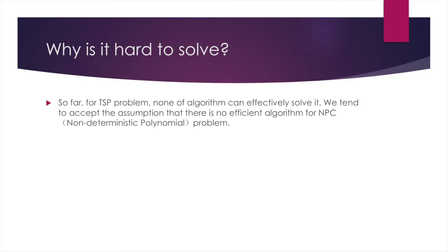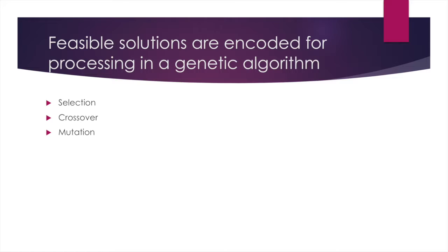Feasible solutions are encoded for processing GA, which is selection, crossover, and mutation. My teammate Jordan will expand more on these parts: selection, crossover, and mutation. Thank you.